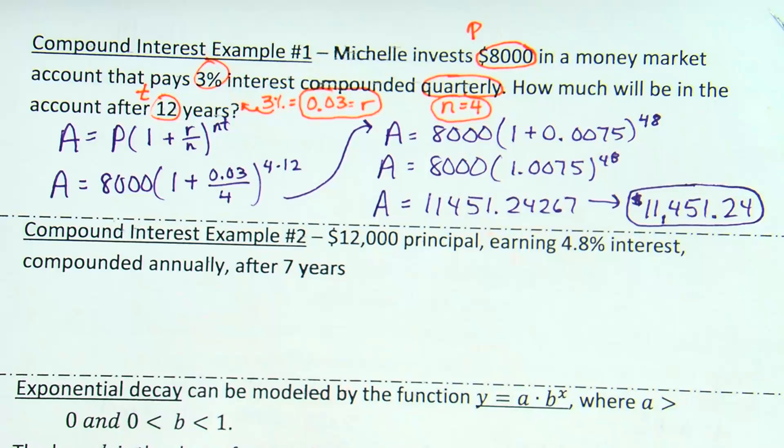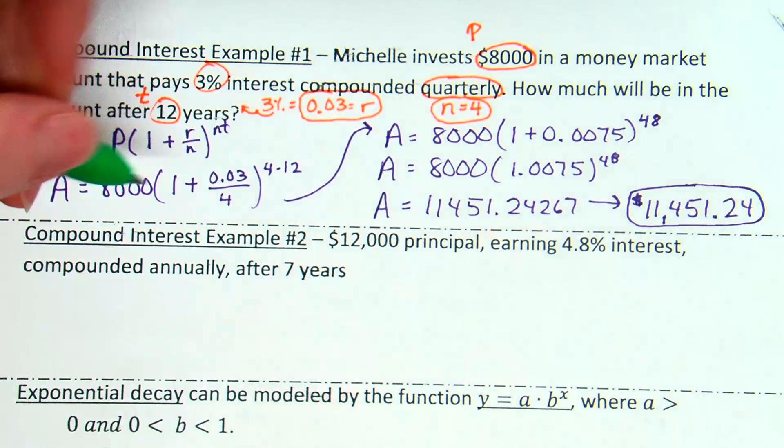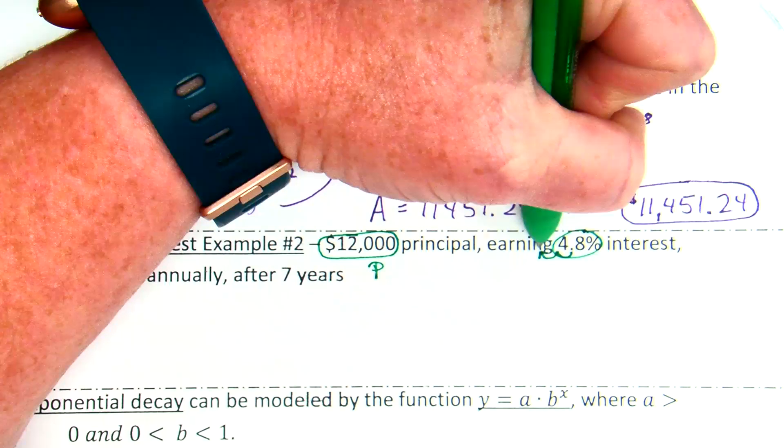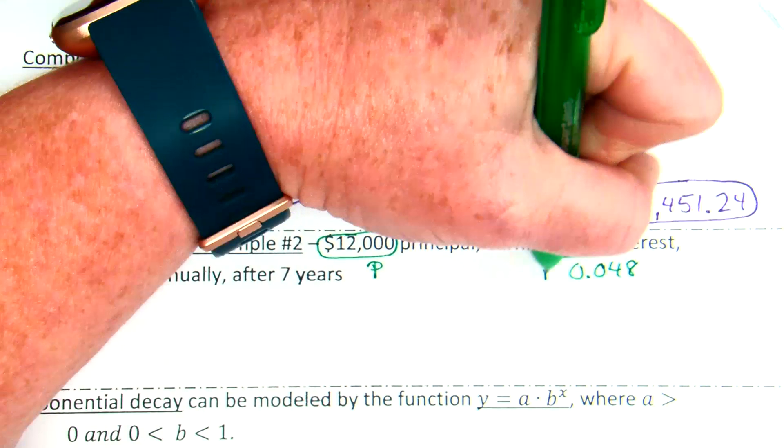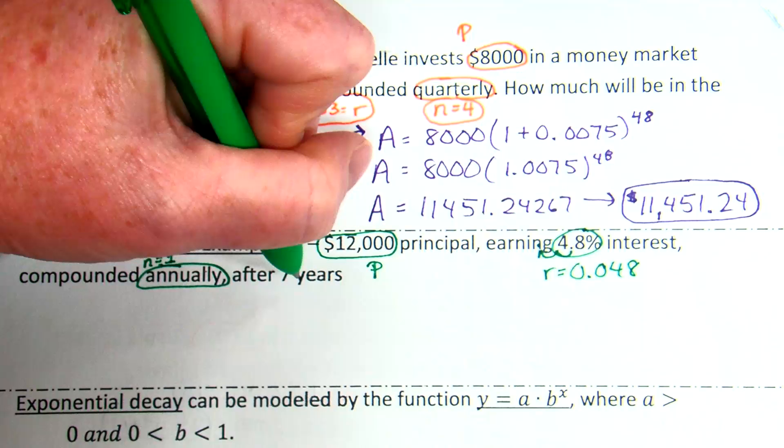Okay. So, example two, compound interest. It just gives you the basics. You don't have to stress about trying to figure it all out. Again, we're using that same formula. What's $12,000 going to go in for? Yeah. So, it's the principal. So, we're going to put it in place of P. What about 4.8%? What do I do with that? That's the interest. Move the decimal over 2. And that makes it 0.048. And that is going to be the R value. Compounded annually. How often does annually happen? How many times a year? Once a year. That's going to tell me N is 1. After 7 years tells me T is 7.